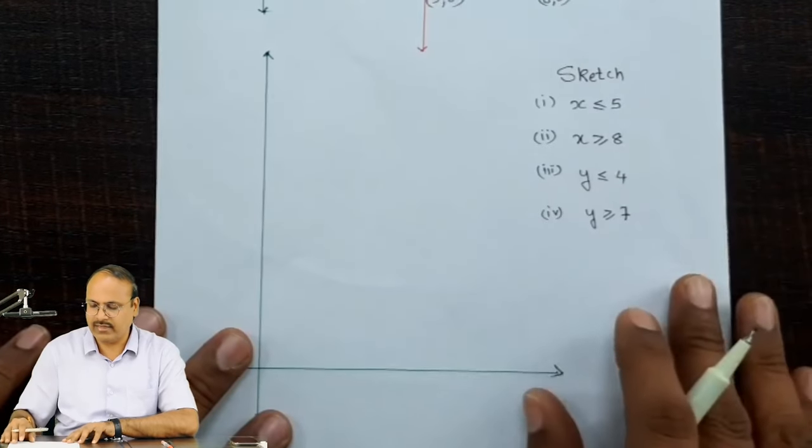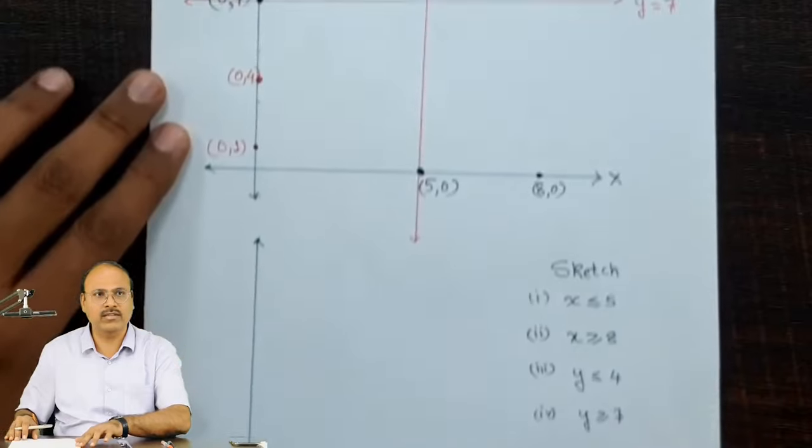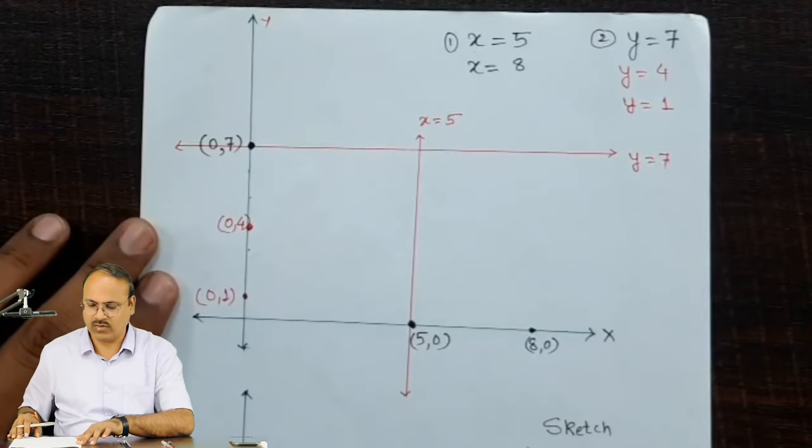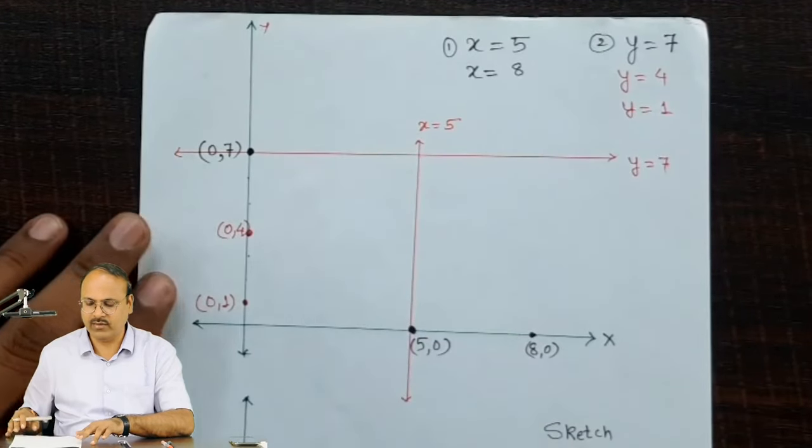The first thing is, let us go back to the previous video lecture. We have seen this graph of the line x equal to 5.